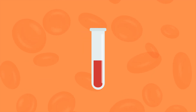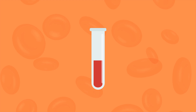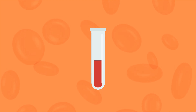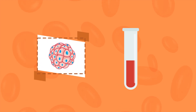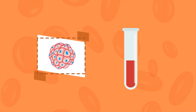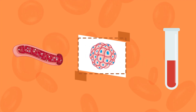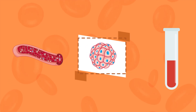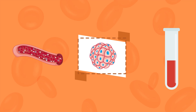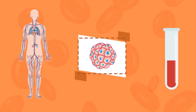Ferritin is a protein that contains iron and is the primary form of iron stored inside of cells. The small amount of ferritin that is released and circulates in the blood is a reflection of the total amount of iron stored in the body.